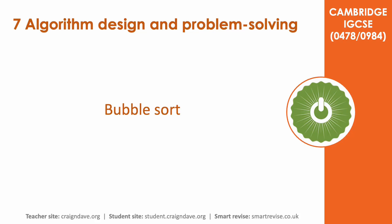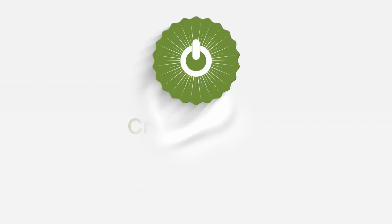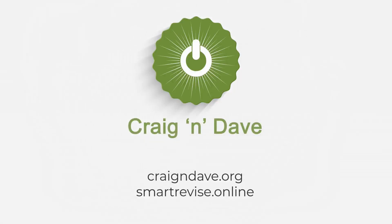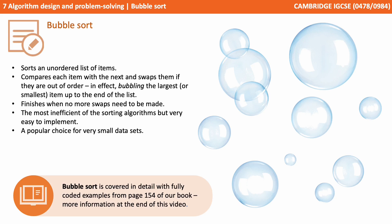In this video we look at the bubble sort algorithm. Many different algorithms exist for helping us sort an unordered set of data items. The bubble sort is a relatively simple one to get your head around, and so it's often an early one which is taught. It allows us to sort an unordered list of items. It compares each item with the next and swaps them if they're out of order, in effect bubbling the largest or smallest item up to the end of the list. The algorithm completes when no more swaps need to be made.